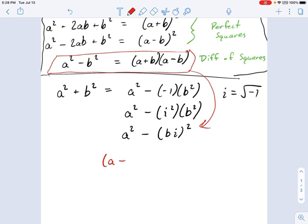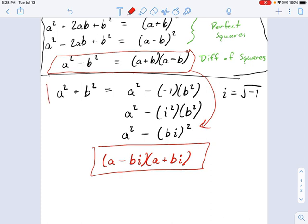And here's the big important part. This is a minus bi times a plus bi. This is our new polynomial identity. So we have here what's called the sum of squares.